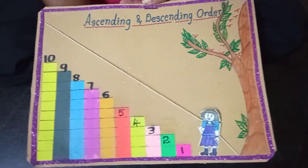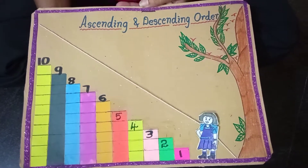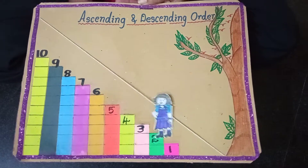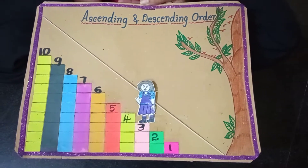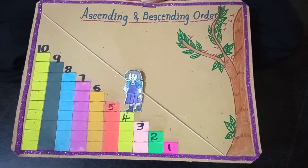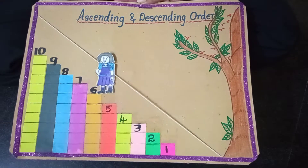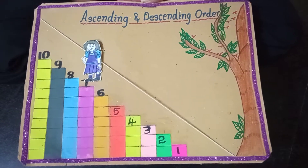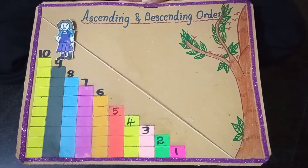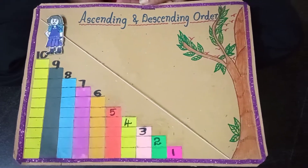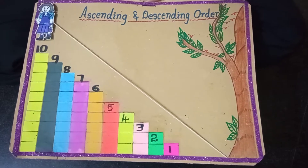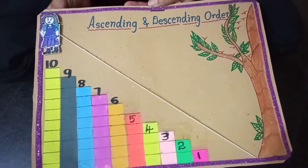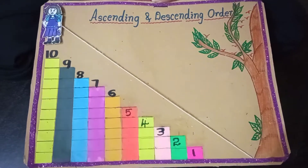Ascending order and descending order. 1, 2, 3, 4, 5, 6, 7, 8, 9, 10. When the numbers increase, we say that it is ascending order.